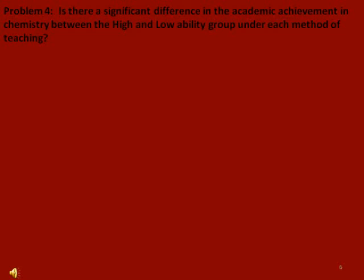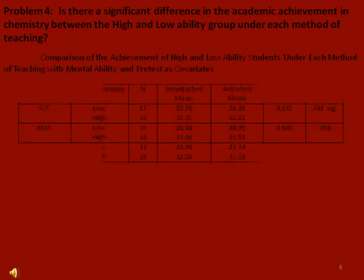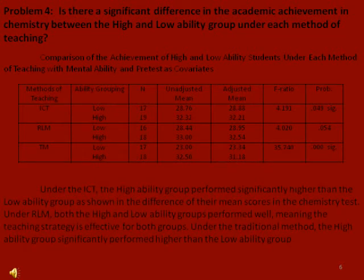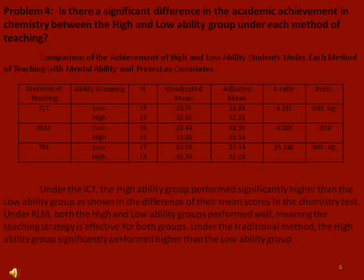Problem 4: Is there a significant difference in the academic achievement in chemistry between the high and low ability group under each method of teaching? Under the ICT, the high ability group performed significantly higher than the low ability group, as shown in the difference of their mean scores in the chemistry test. Under RLM, both the high and low ability groups performed well, meaning the teaching strategy is effective for both groups. Under the traditional method, the high ability group significantly performed higher than the low ability group.